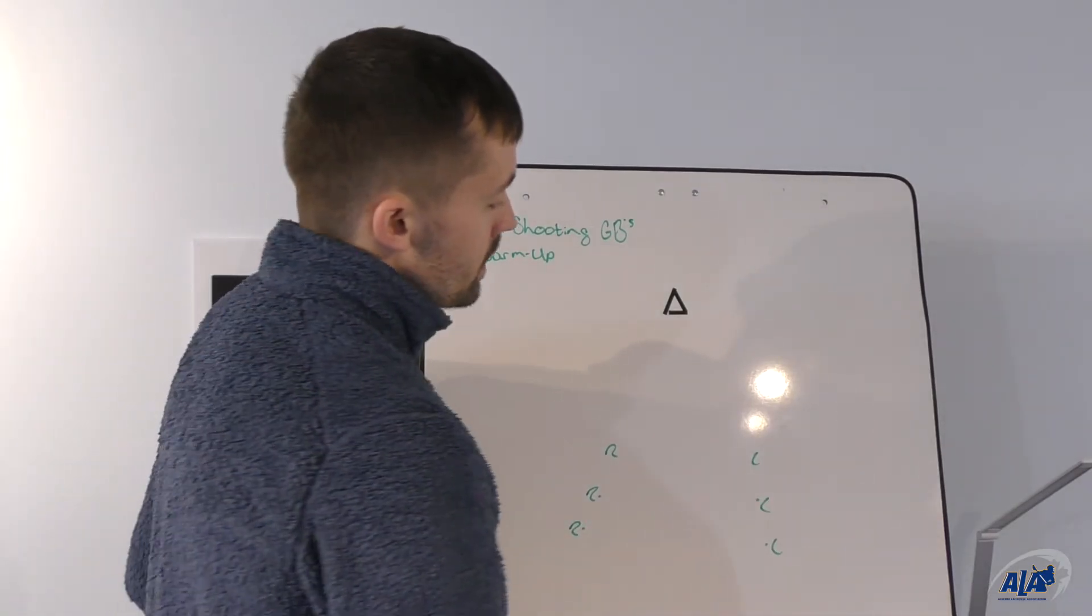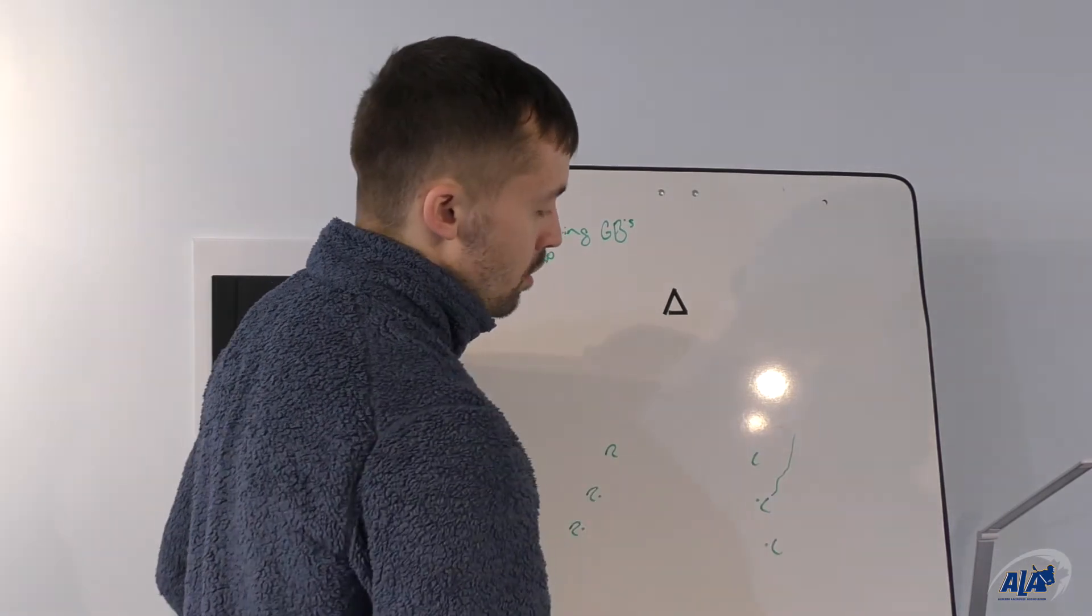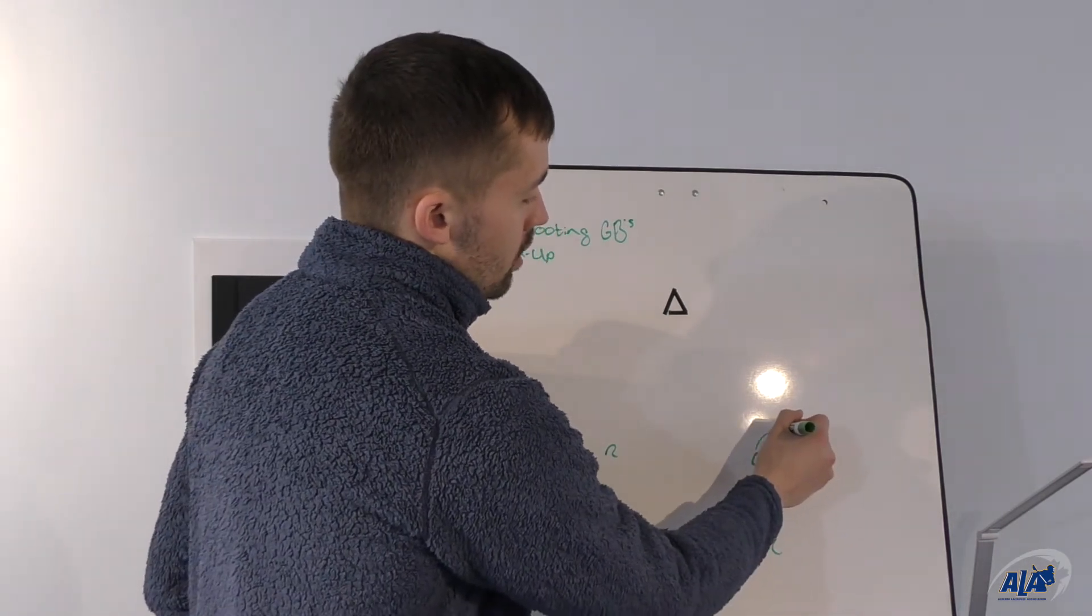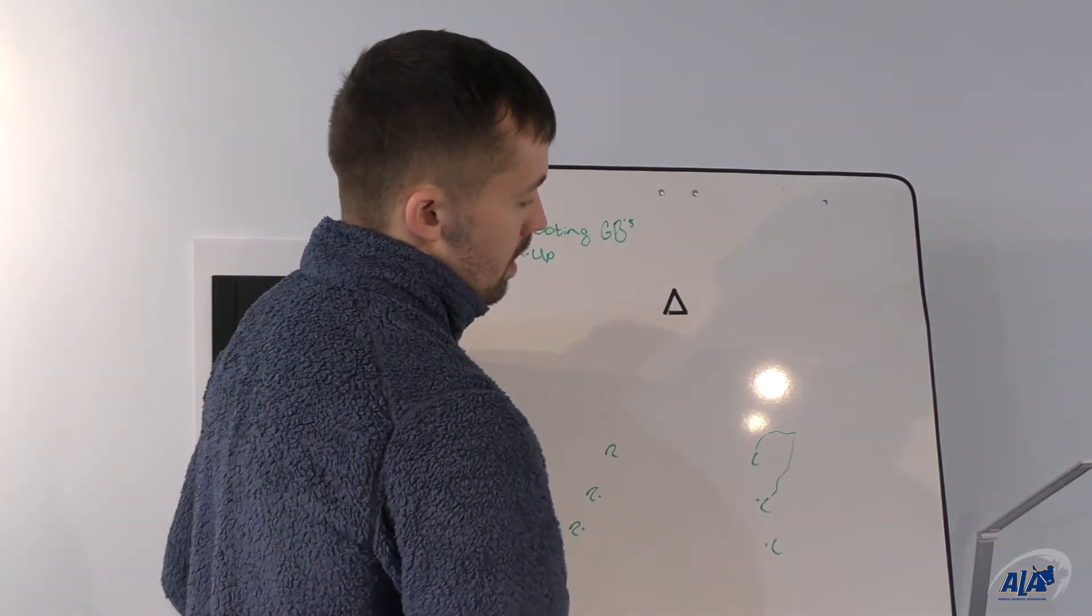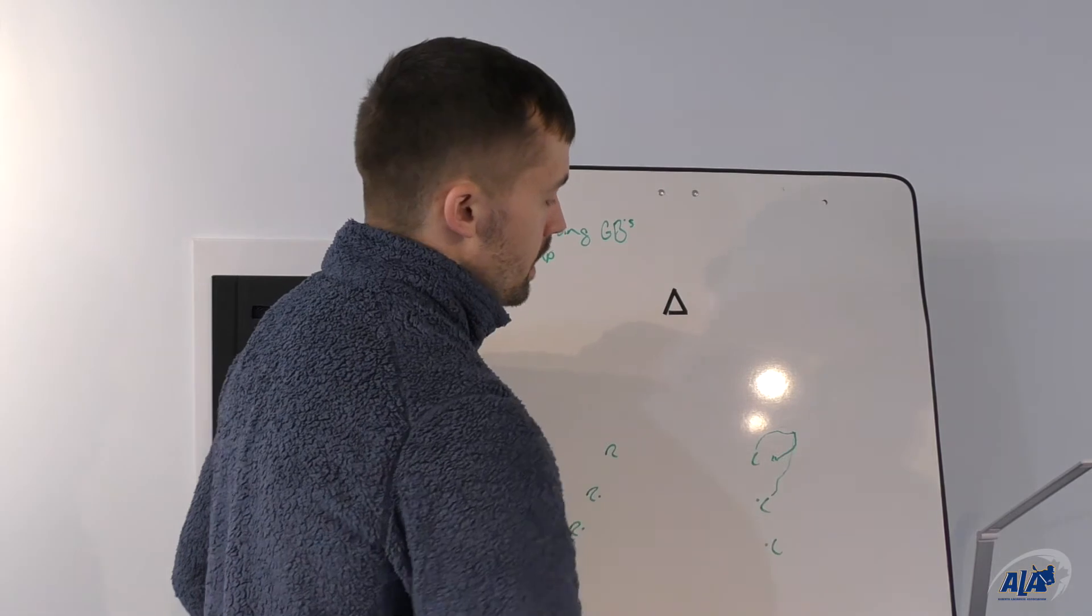If we start the drill here on the left-hand side, the second lefty in line with a ball is just going to roll it out to the sideboards area. The first lefty in line is going to run hard, attack the ball, pick it up. Now as they pick it up, they're going to curl and start moving their feet up the floor.